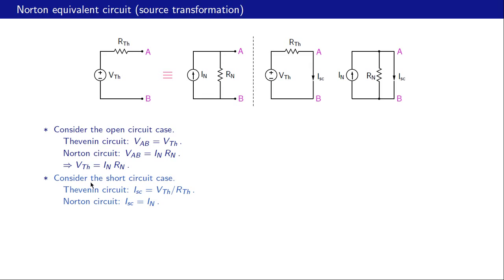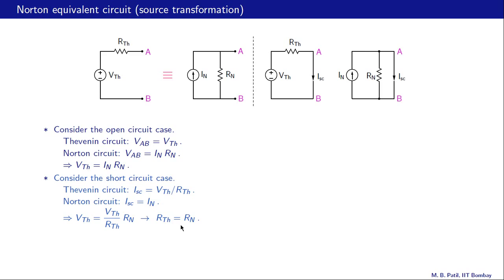Using the first relationship and substituting In equals Vth divided by Rth, we get Vth equal to (Vth divided by Rth) times Rn. The Vth cancels and we get Rth equal to Rn. So if we know the Thevenin equivalent circuit we can obtain the Norton equivalent circuit: Rn and Rth are equal, and In is equal to Vth divided by Rth.